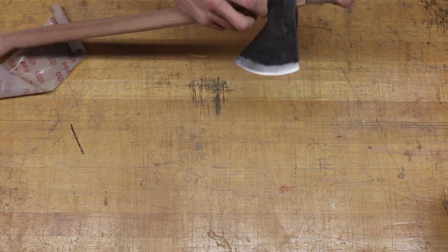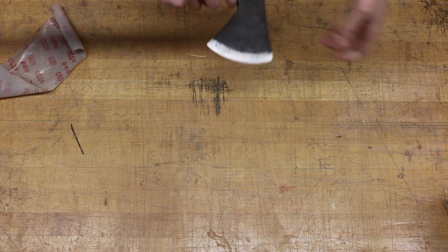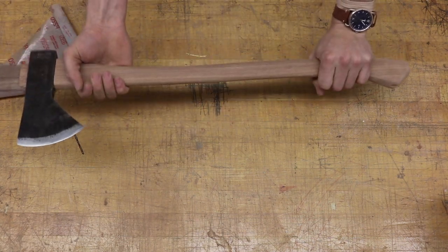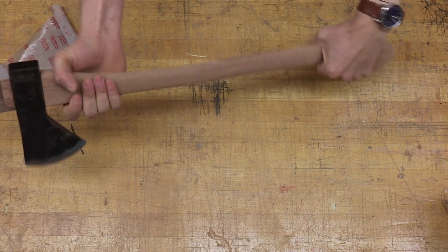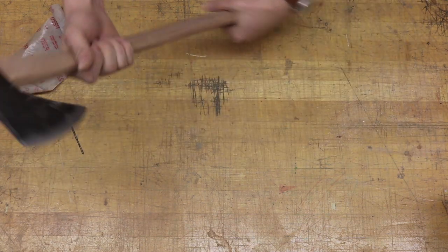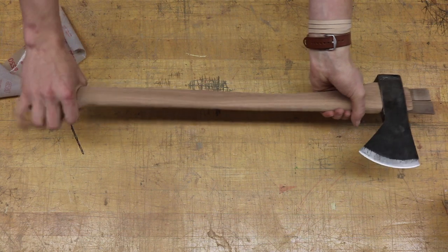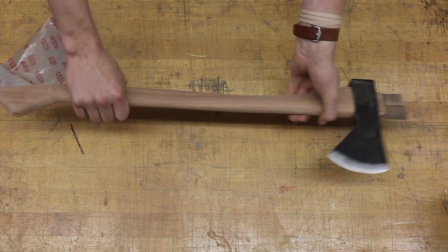Just doing a quick test fit here. I want to make sure the axe head feels right on the handle. Really this whole process is all about feel and how it feels when you're swinging it, and I believe this is actually where the term 'get the hang of it' comes from—hanging an axe head.